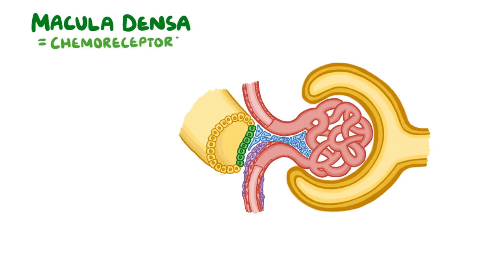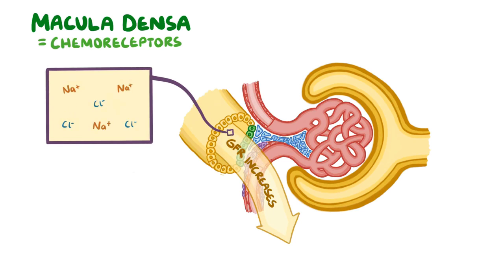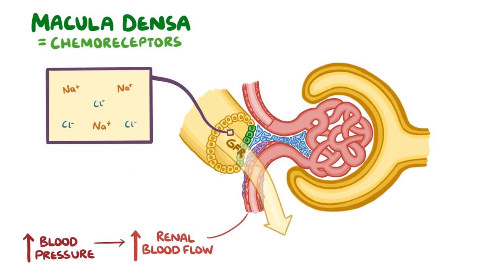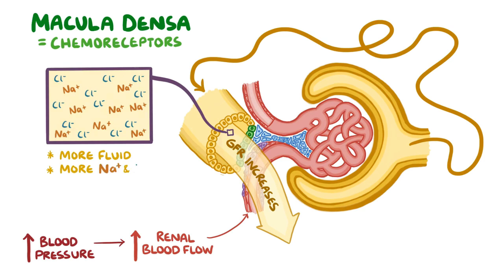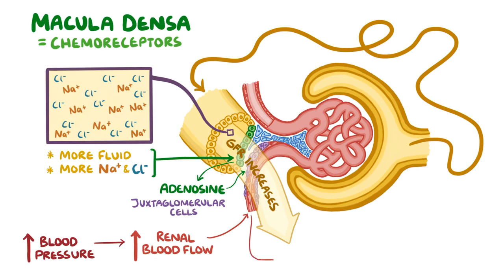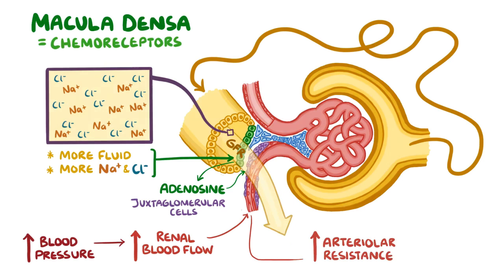Macula densa cells can sense when glomerular filtration rate increases, based on the quantity of sodium and chloride ions flowing through the tubule. When blood pressure rises, renal blood flow and GFR also increase, meaning more fluid and more dissolved sodium and chloride ions reach the macula densa. In response, macula densa cells release adenosine, which diffuses to the nearby afferent arteriole acting as a paracrine signal, increasing arteriolar resistance and reducing the GFR in an autoregulatory fashion.